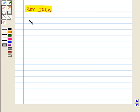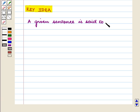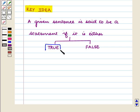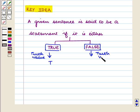We know that a given sentence is said to be a statement if it is either true or false. If the statement is true, then its truth value is T, and if the statement is false, its truth value is F.